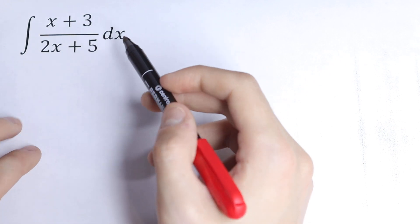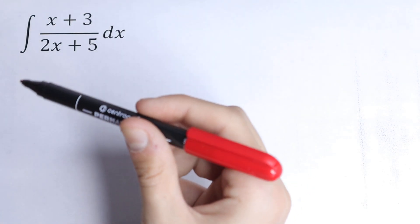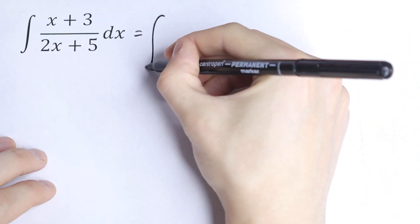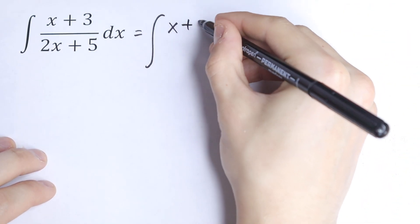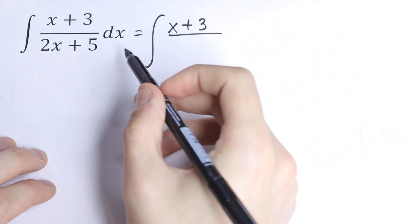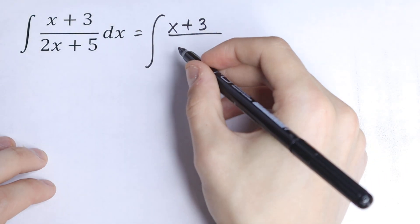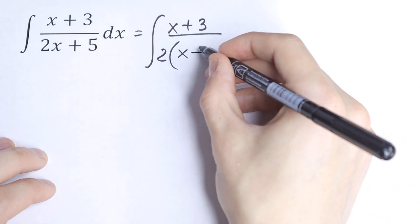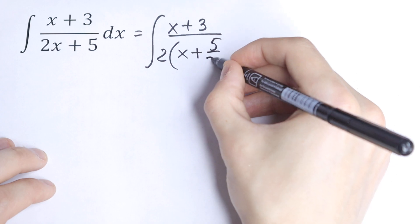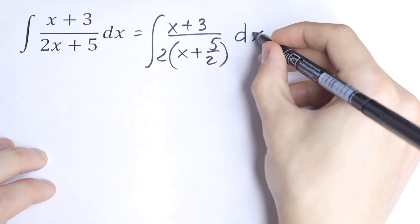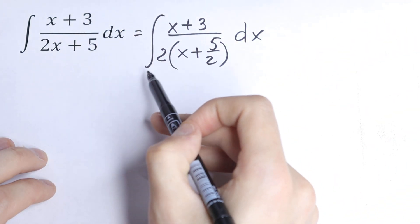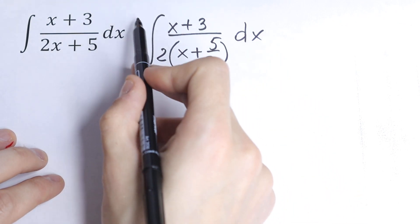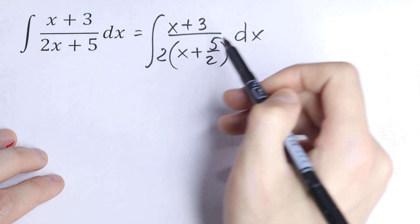So what are we going to do? I want to suggest factoring out 2 from our denominator. So this integral will be equal to the integral of (x + 3) over 2 times (x + 5/2) dx. We just factor out 2 from our denominator.